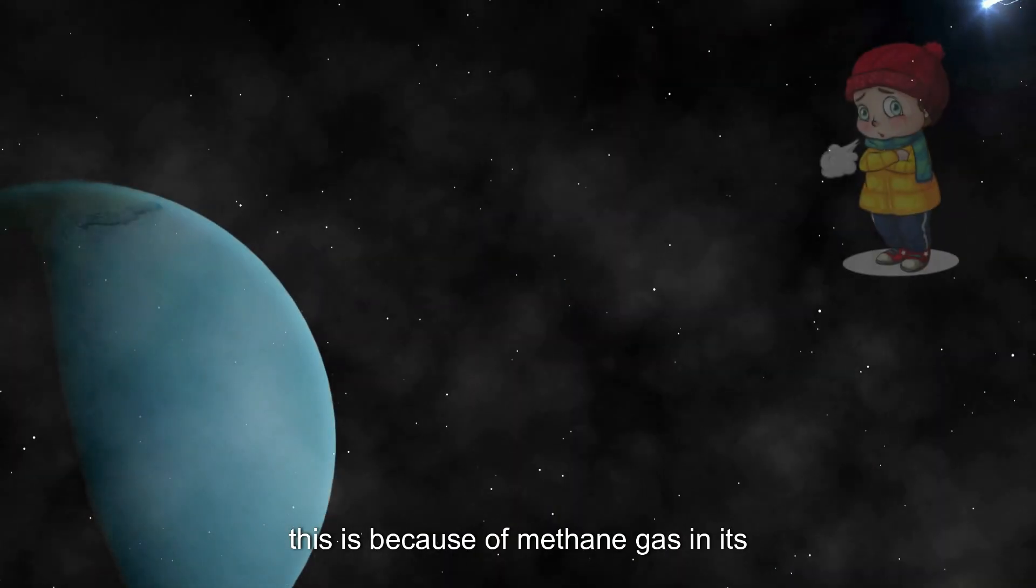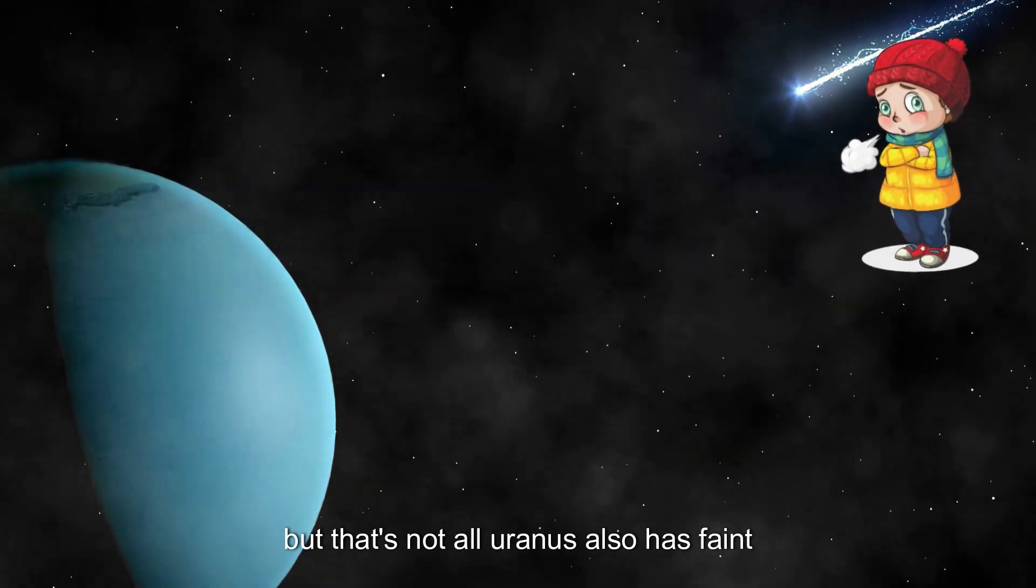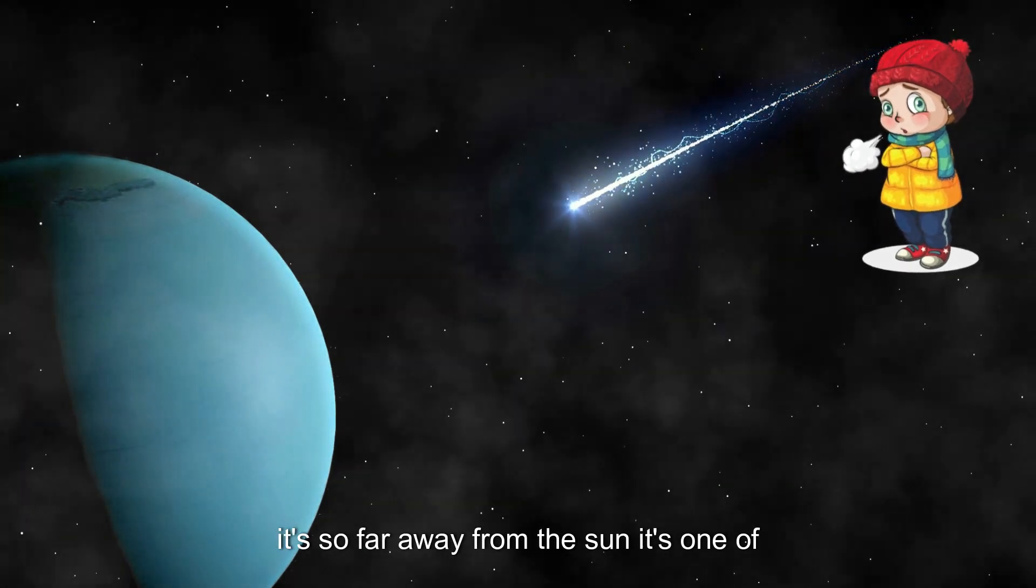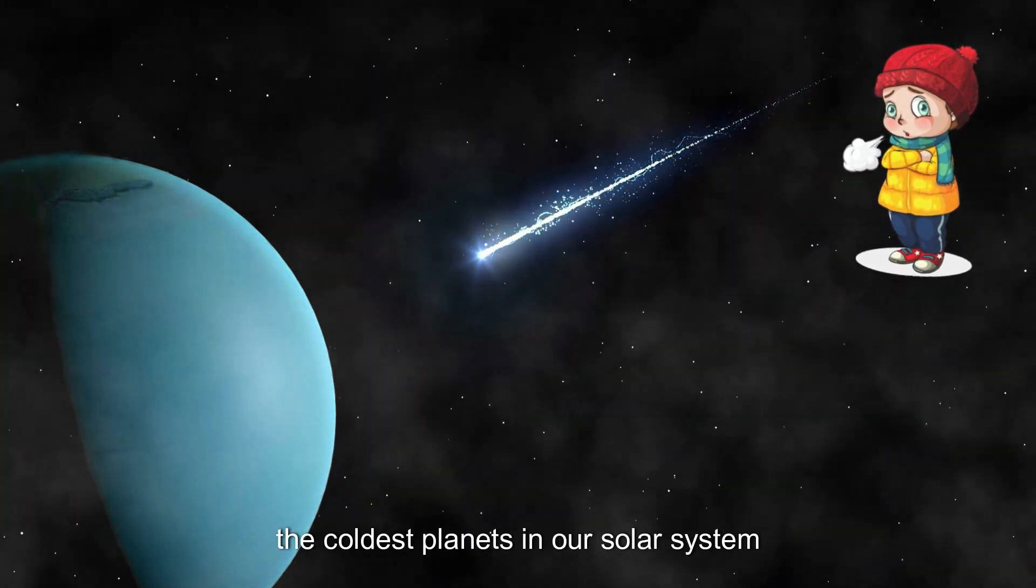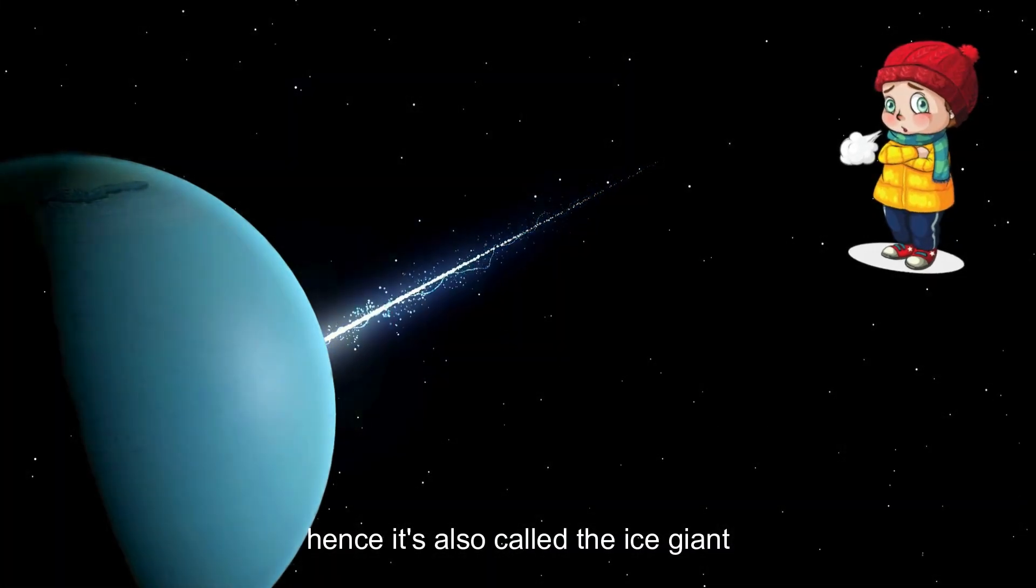This is because of methane gas in its atmosphere. But that's not all. Uranus also has faint rings around it. Uranus is very cold. Because it's so far away from the Sun, it's one of the coldest planets in our solar system. Hence it's also called the ice giant.